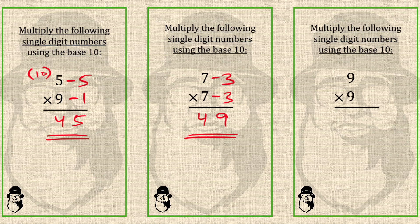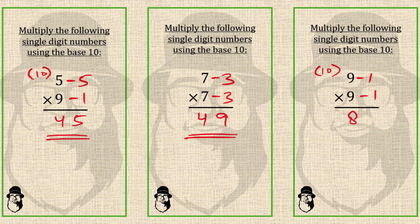Here both are 9 — they are near 10, so base is 10. 9 from 10 is 1, so we write minus 1 here and minus 1 here. Then we cross subtract: 9 minus 1 is 8. And for the right part, we multiply these two complements: 1 times 1 is 1. So 9 times 9 is 81.